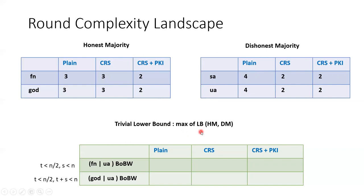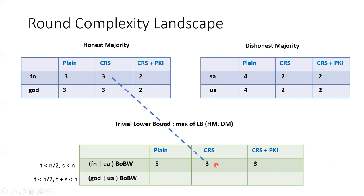Therefore, taking the maximum of the lower bounds for honest majority and dishonest majority already gives a lower bound for best of both worlds. But this may not be tight, because BoBW MPC may require more rounds. For the class of fair-UA best of both worlds, we showed that 5 is the lower bound for the plain model and 3 is the lower bound for the other two setups. The lower bound in the CRS model is directly implied from the honest majority lower bound for fairness. However, for the plain model and CRS plus PKI, these lower bounds were not directly implied and were in fact new.